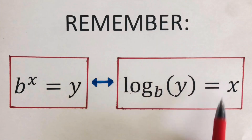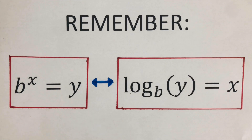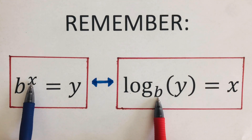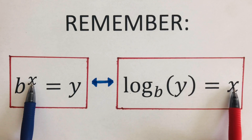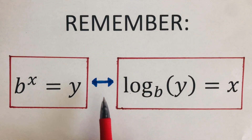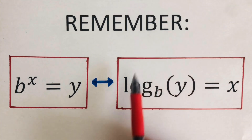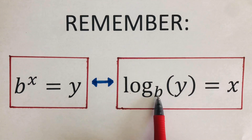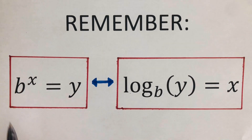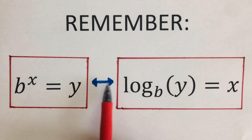We remember that the logarithmic equation is the inverse of the exponential equation. The base goes here, the exponent x goes on this side of the logarithmic equation, and y goes on the other side. The arrow goes back and forth — this means that if we want to change a logarithmic equation into exponential form, we place all the letters and variables into that form, and vice versa. You can go back and forth between the two.